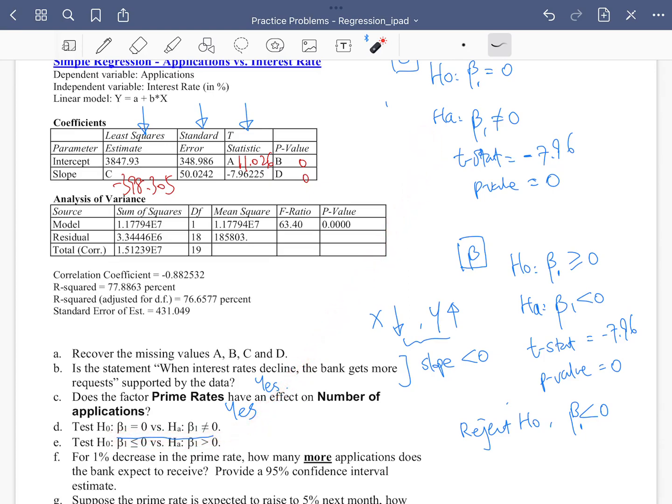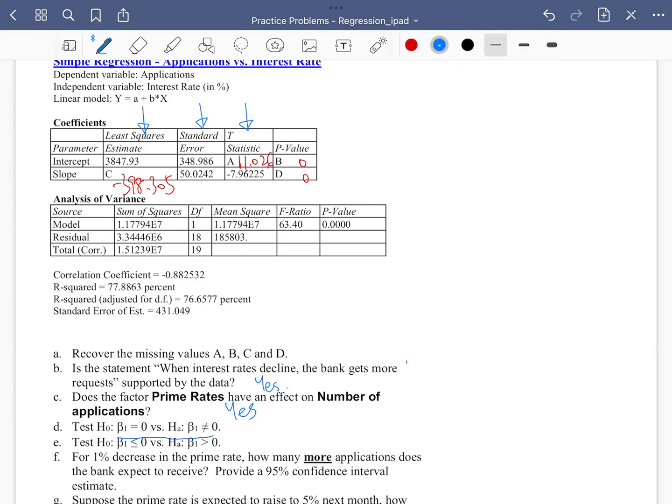The only thing that's slightly tricky is part E. Part E is an upper-tailed test. So upper-tailed test, and we have already done a lower-tailed test. Let's see how we can work on that. They're somewhat related as well. I'm working on part E. So beta 1 less than or equal to 0, beta 1 more than 0. This is an upper-tailed test.